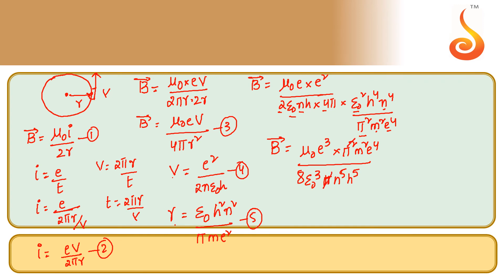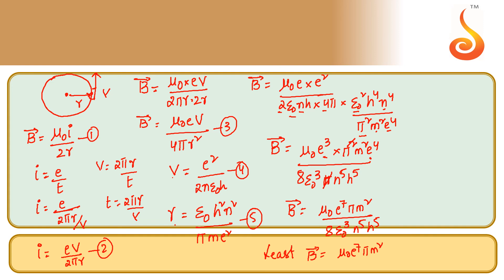Hence, the magnetic field is proportional to 1/N⁵ × h⁵. The least magnetic field occurs when N = 1, giving: B_min = μ₀e⁷πM² / (8ε₀³h⁵). This is the least magnetic field.